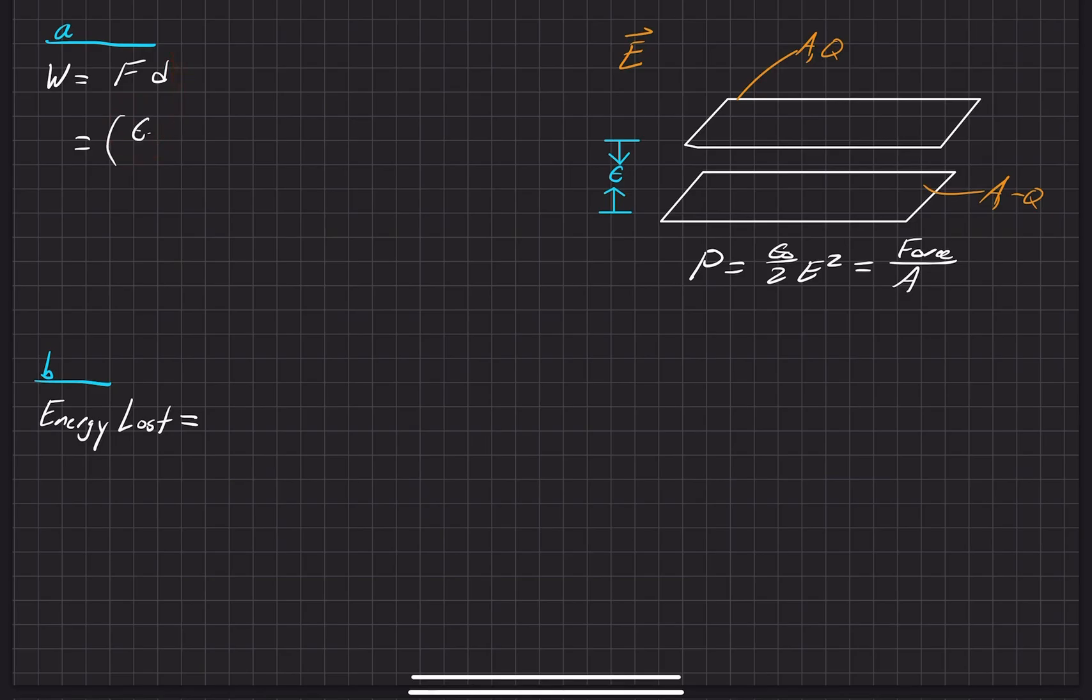We have epsilon naught over two times the electric field squared times the area, and then our D is just equal to epsilon, which is that small amount here, not to be confused with epsilon naught. So that's the work done.